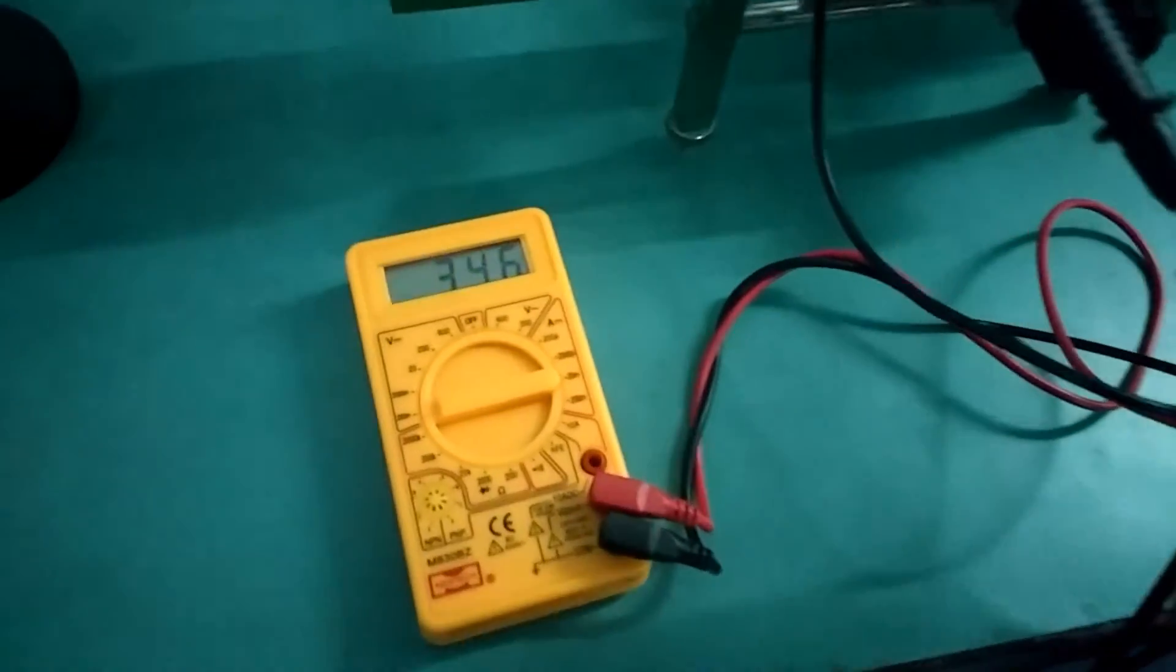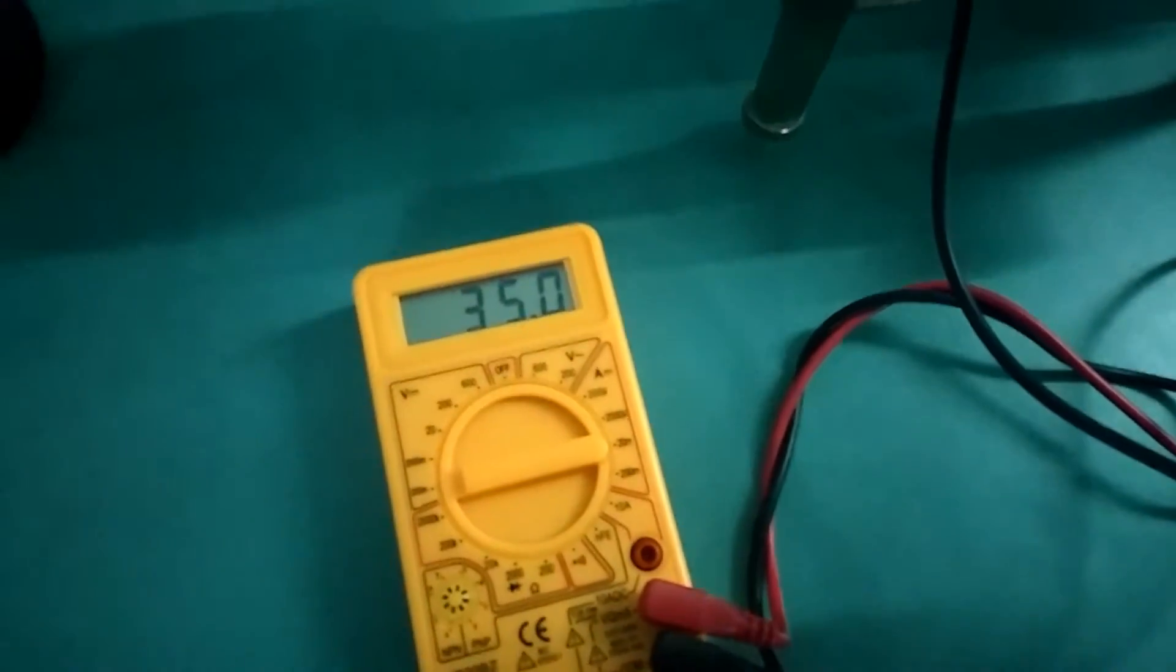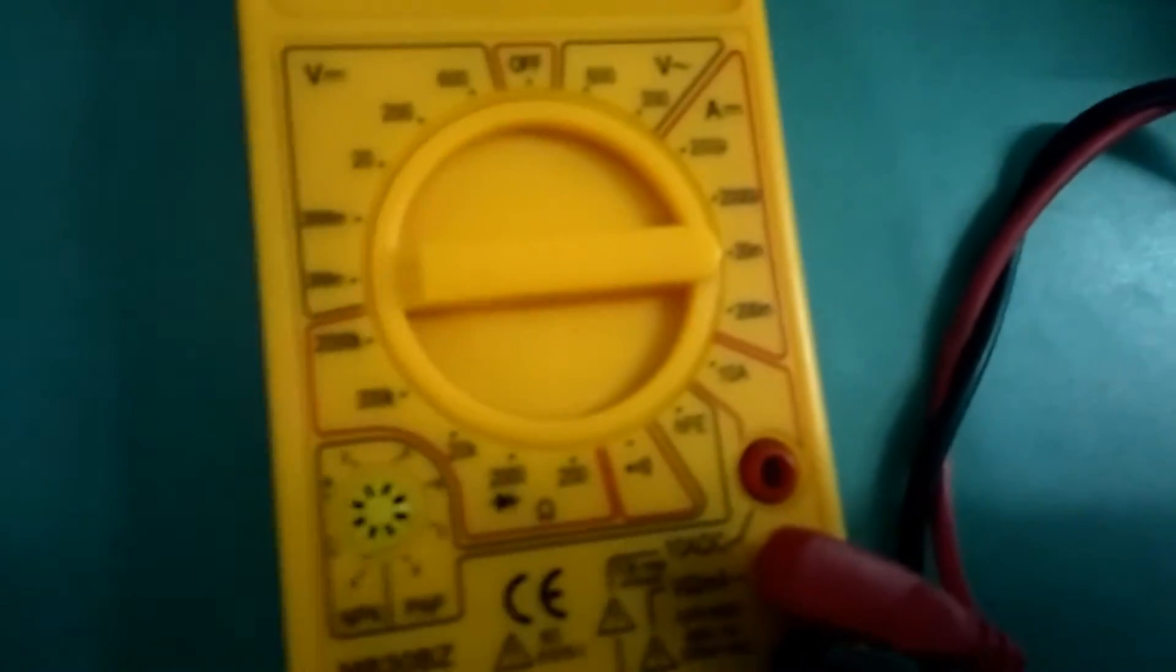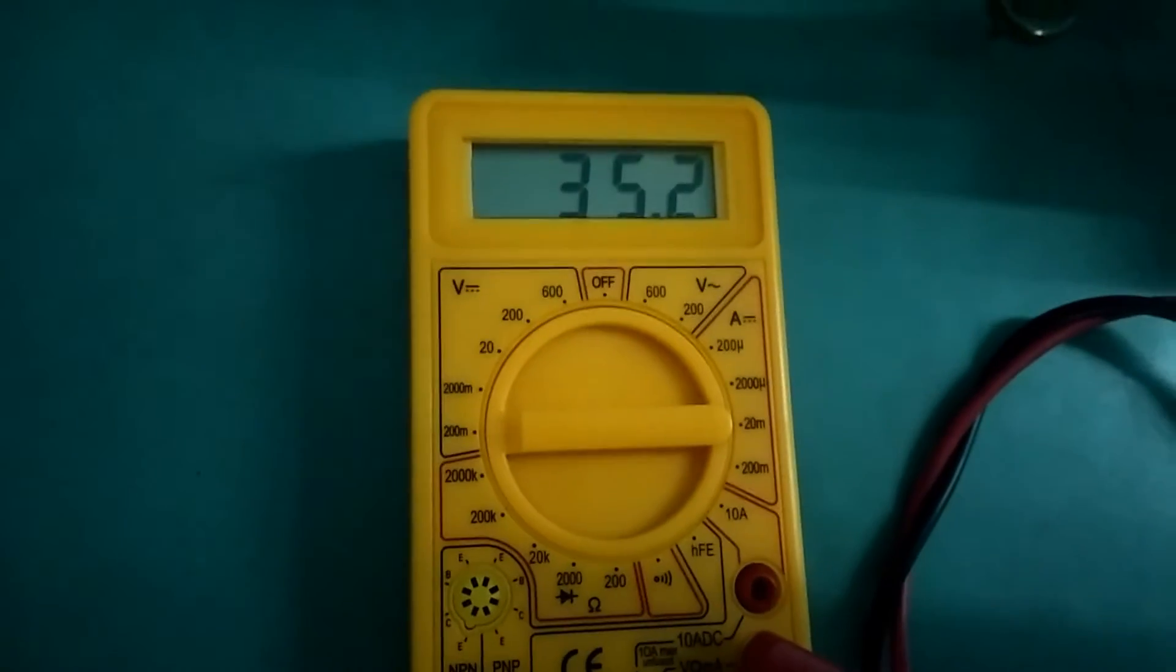And from the multimeter, we are noting the DC level of the signal. So, this is one set of readings.